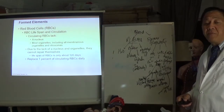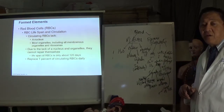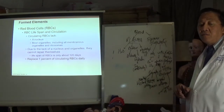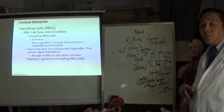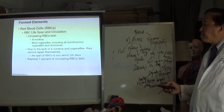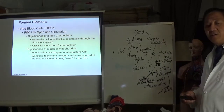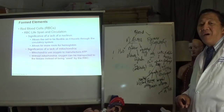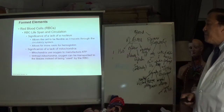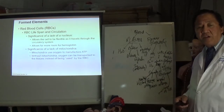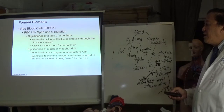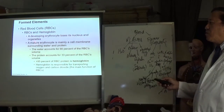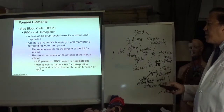Red blood cells are very small — only 7.7 microns — just enough to pass through a capillary. They contain hemoglobin, the protein responsible for transporting oxygen and carbon dioxide. Red blood cells lack a nucleus and most organelles, so they cannot repair themselves and die within 120 days. They die in the spleen, where they are recycled — particularly the iron component, which is returned to the red bone marrow.